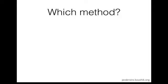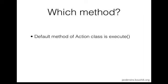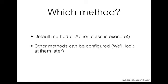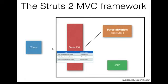But with action classes, things are slightly different — they're not directly tied to GET or POST methods. By default, there is a method called execute. So if you're writing an action class and you have a method called execute, that is the method called when the mapping is triggered. We can configure other methods later, but right now we're going to stick to the default execute method. Whenever a client makes a request — say for getTutorial — Struts looks up TutorialAction and executes the execute method.